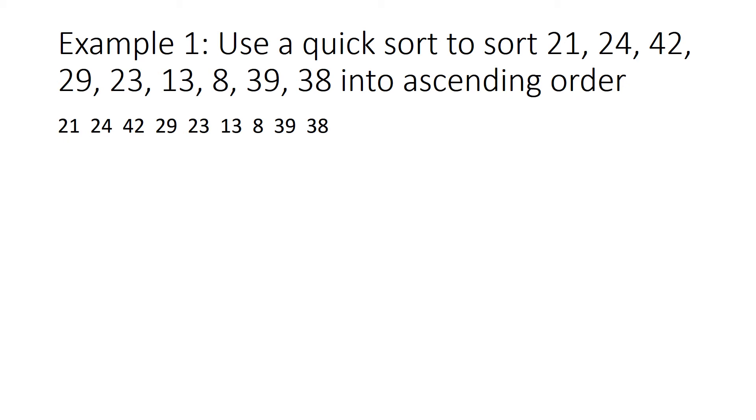So then we need to choose our pivot. So as you can see here n is 9 because there's nine items in the list, so our midpoint is 5. So we're going to circle that to show that we're currently using it as a pivot.